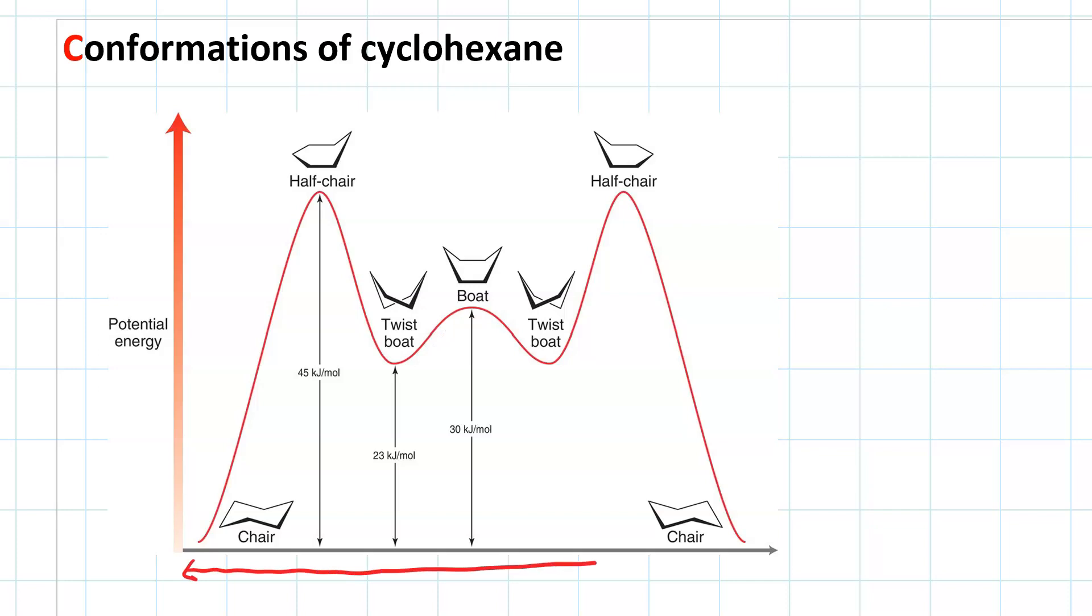This whole process, going from one extreme to the other, is called a ring flip. Now, the chairs are so much more stable than the other conformations that essentially we can ignore the other conformations and just consider the cyclohexane as being in one of two chairs.